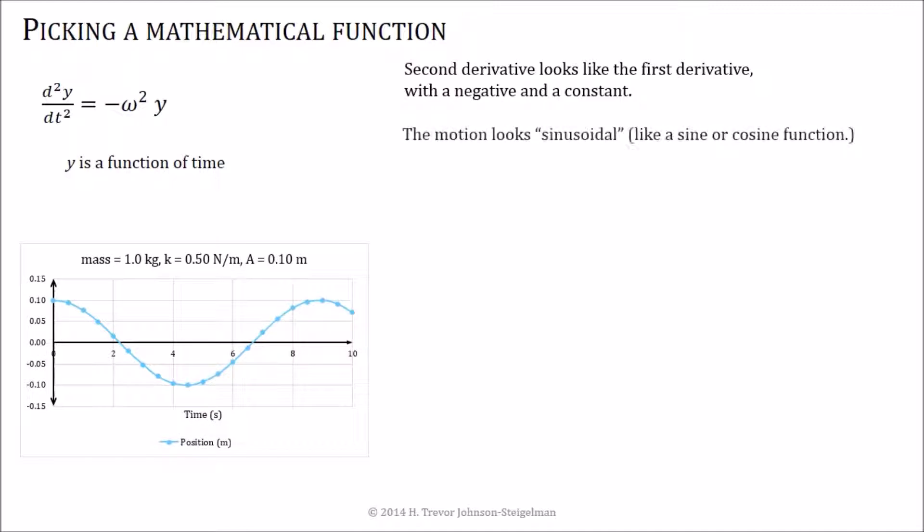Now we know that the second derivative looks like the first derivative with this negative and some constant squared out front of it. We know that if we map it out in time and draw a graph of that, that the motion looks sinusoidal. In other words, it looks like a sine or a cosine function.